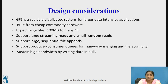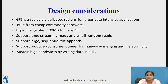Google File System is a scalable distributed system for handling larger data-intensive applications. It is built from cheap commodity hardware. It is most suitable to handle large files ranging from 100 megabytes to many gigabytes. It supports large streaming reads and small random read operations, as well as large sequential file appends. It supports producer-consumer queues for many-way merging and file atomicity, allowing multiple clients to access files concurrently. It uses bulk data transfer in a single operation, sustaining high bandwidth.